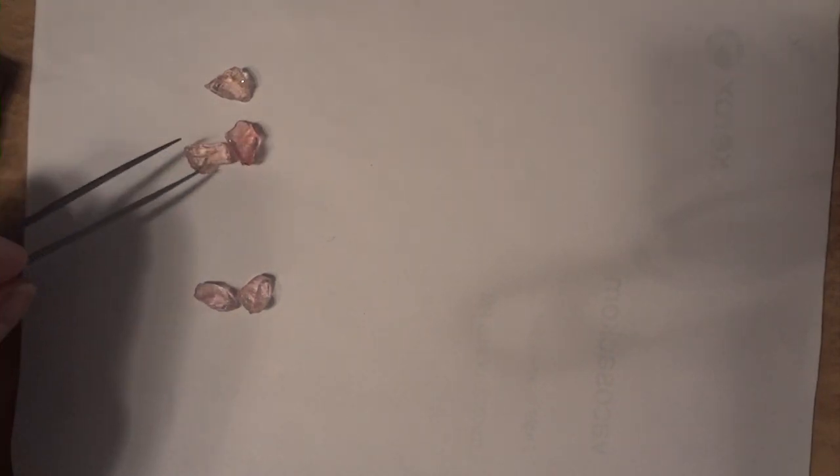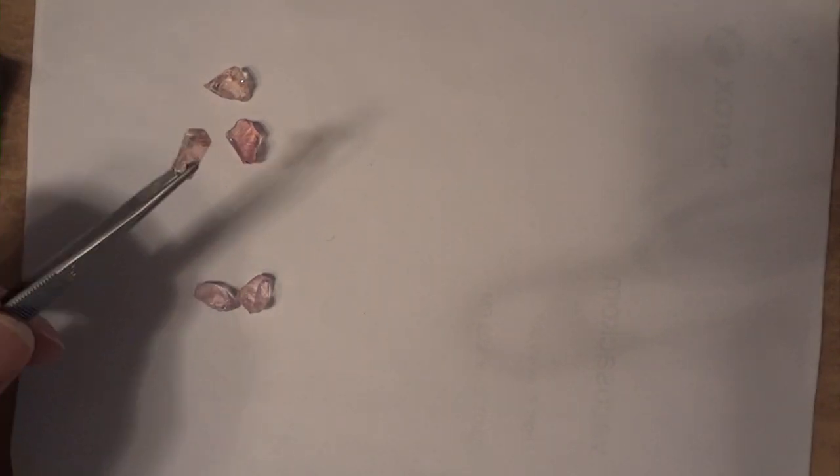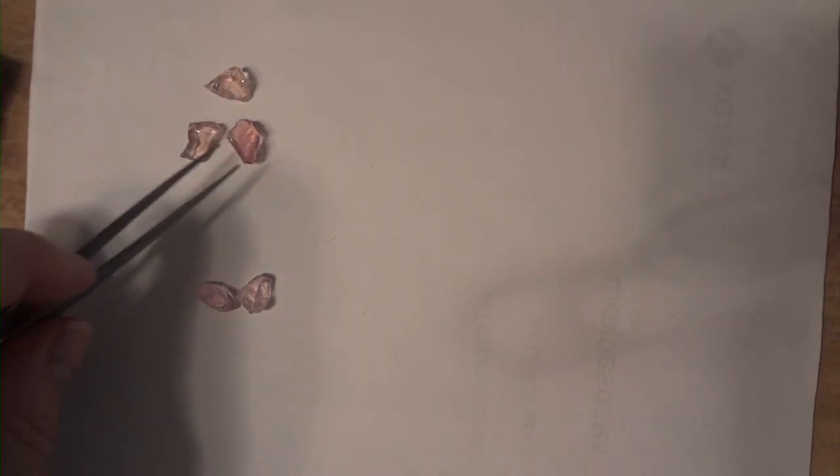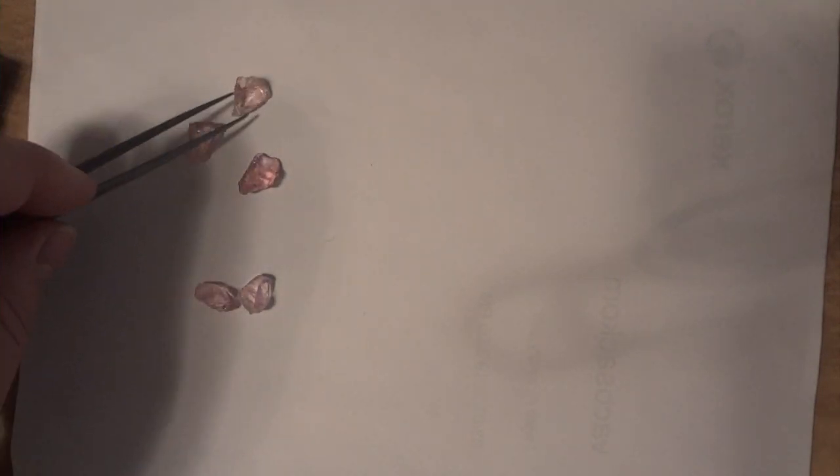When you evaluate rough, what you want to do is look at the color, the size, the shape, how clean it is inside. Check the clarity and then make your decision. This piece of rough, for example, looks kind of on the thin side. So it's going to be a problem. You're going to lose a lot of rough because you can't cut it this big because it's too thin.